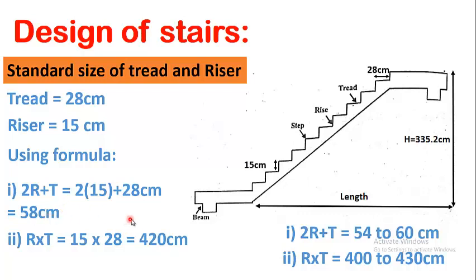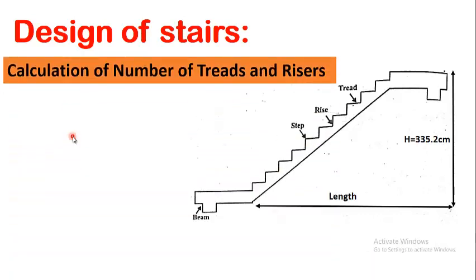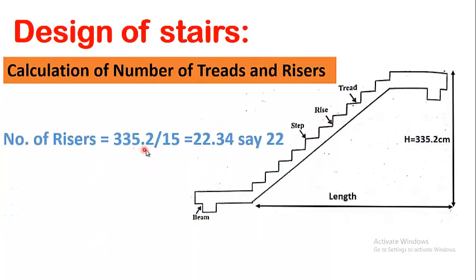We will choose 28 centimeters as the thread and 15 centimeters as the riser. To calculate the number of risers required to achieve the total height, we divide 335.2 by 15. 335.2 is the total height and 15 is the height of each riser, giving us 22.34 — approximately 22 risers are required to reach from the lower level to the upper level.